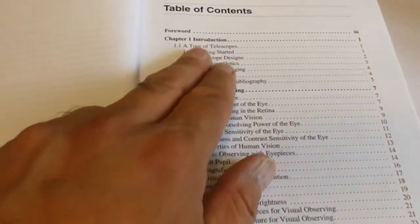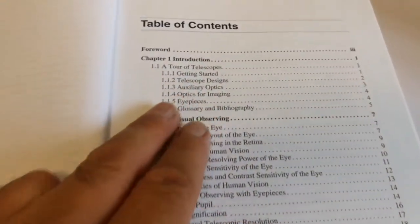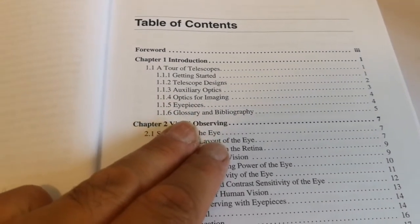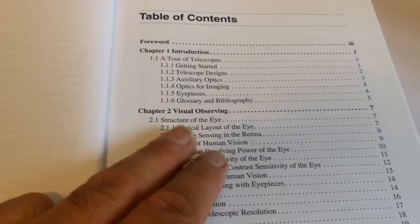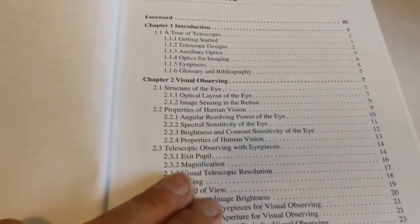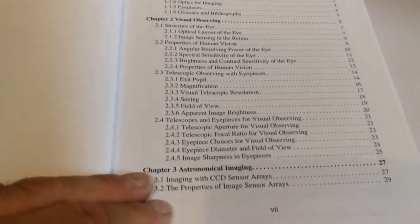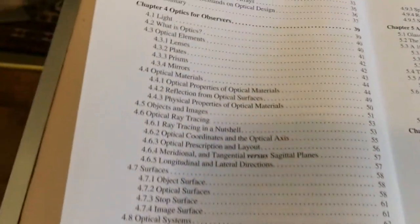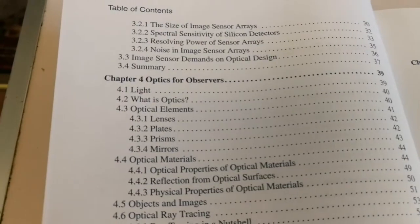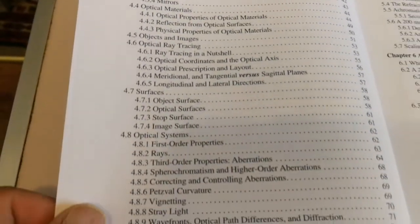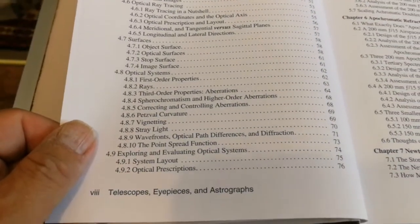The table of contents has four forewords, then: Introduction, The Two of Telescopes, Getting Started, Telescope Design, Auxiliary Optics, Optics for Imaging, Eyepieces, Glossary, and Bibliography. Visual Observing, The Structure of the Eye, Astronomical Imaging, Optics for Observers, elements of optics, ray tracing, surfaces, optical systems. That's really comprehensive. Achromatic refractors, apochromatic refractors, Newtonian reflectors — it explains everything, all the different f-numbers.